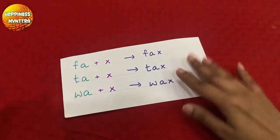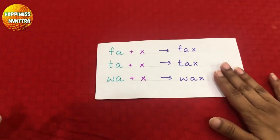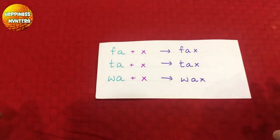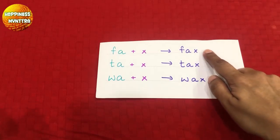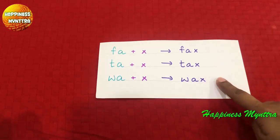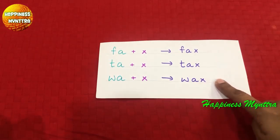Finally, we have the AX family. So we have: fax, tax, and wax.